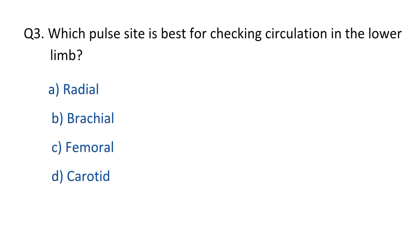Question No. 3. Which pulse site is best for checking circulation in the lower limb? The right option is C, popliteal.